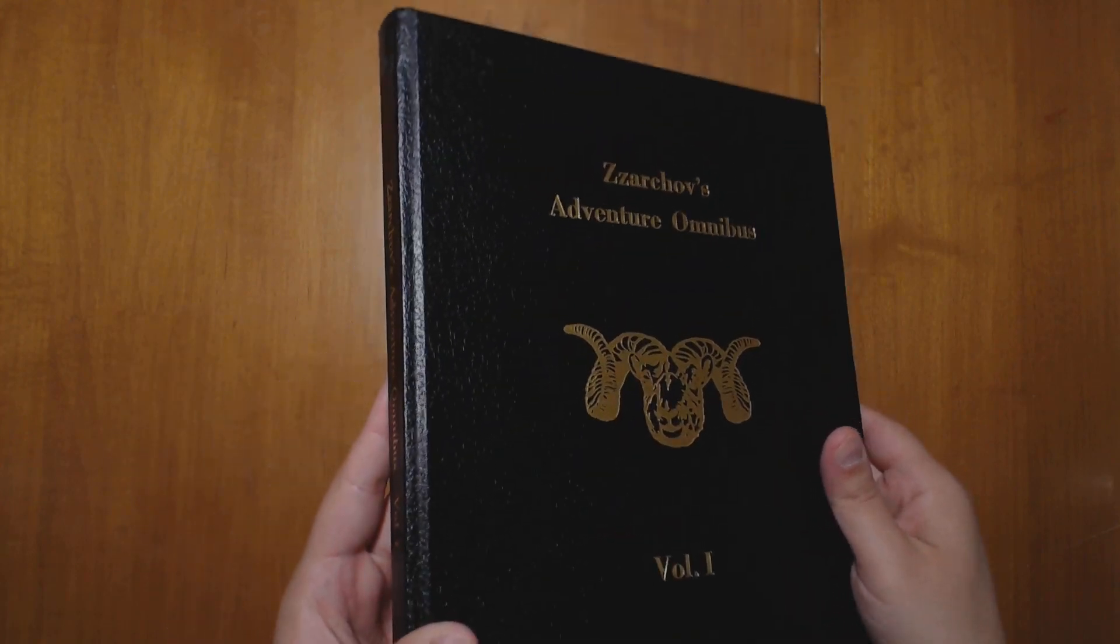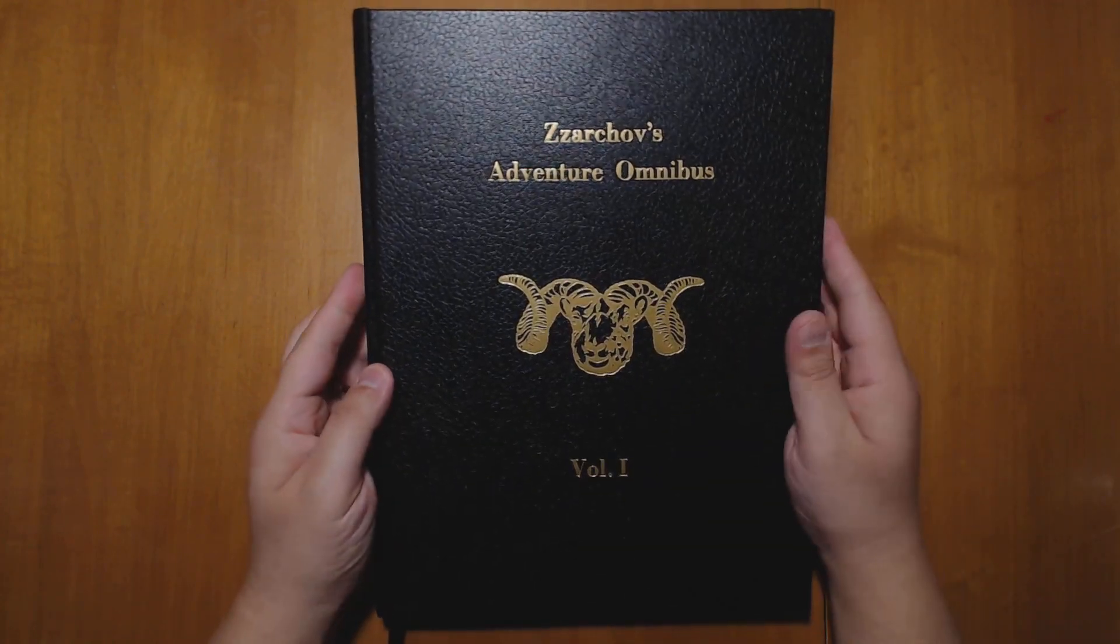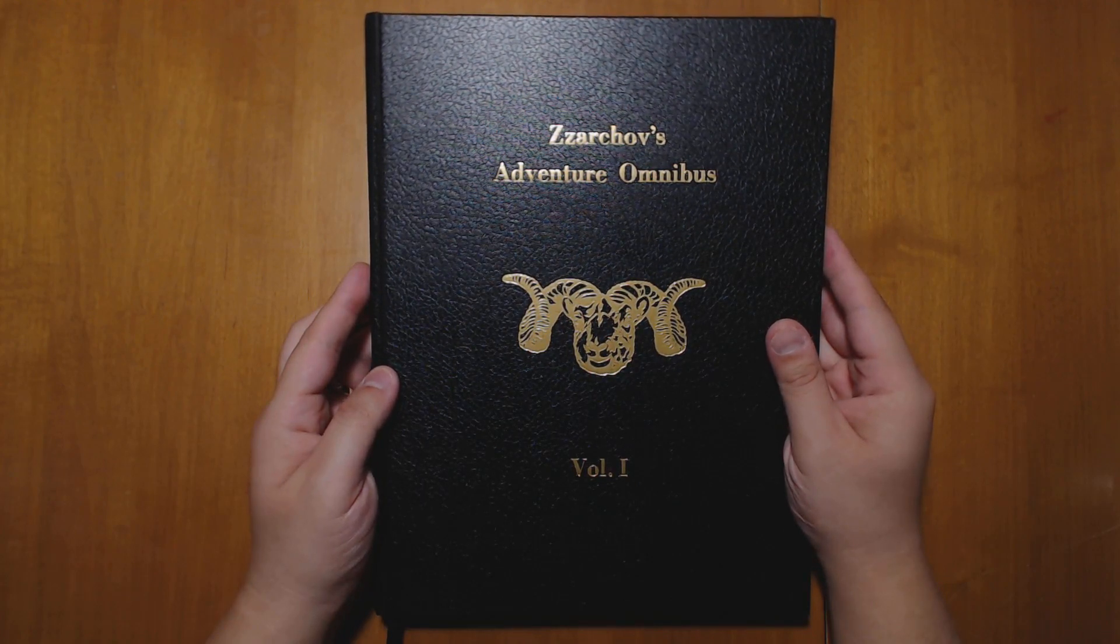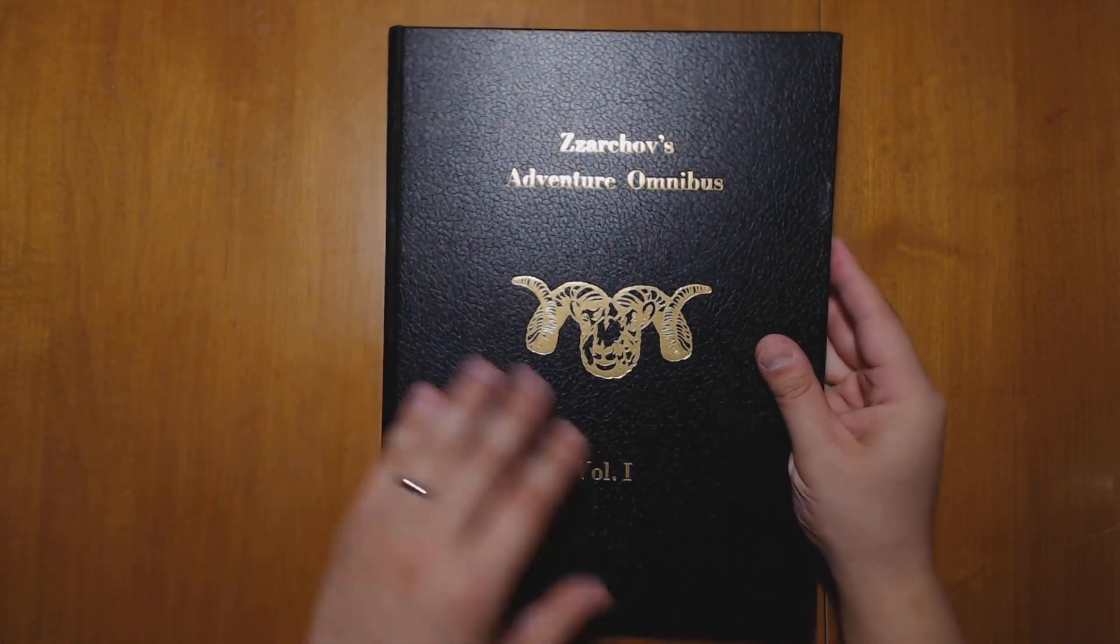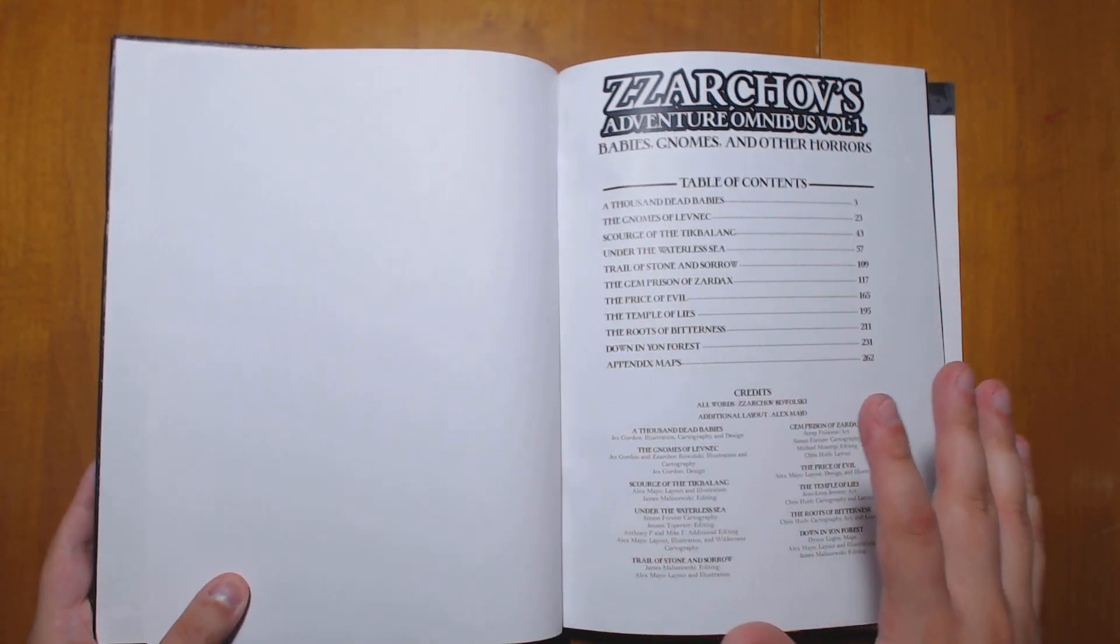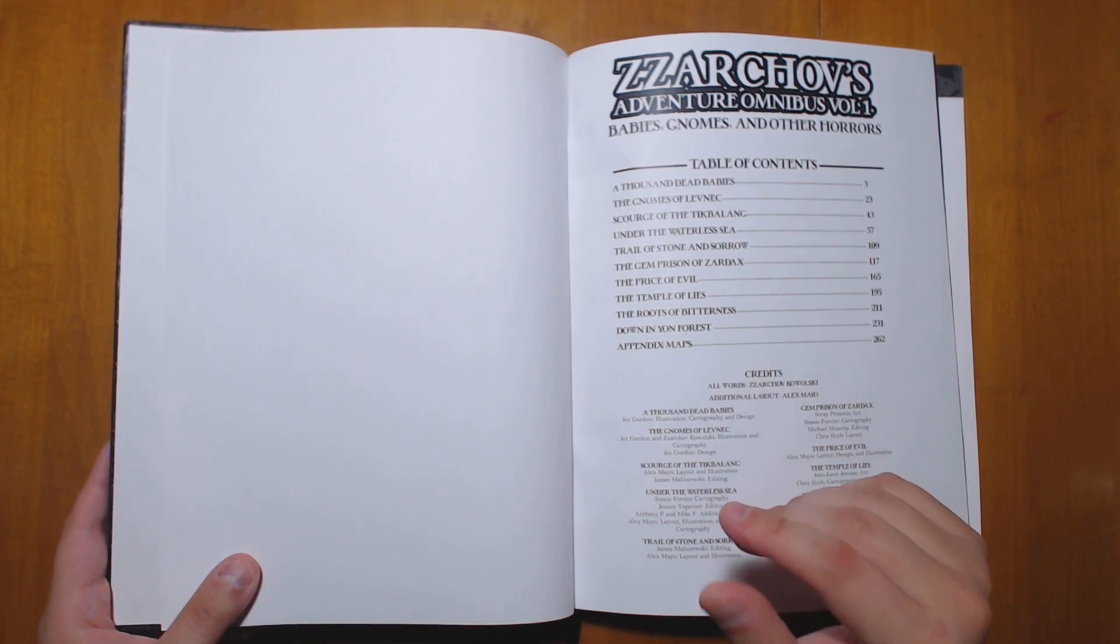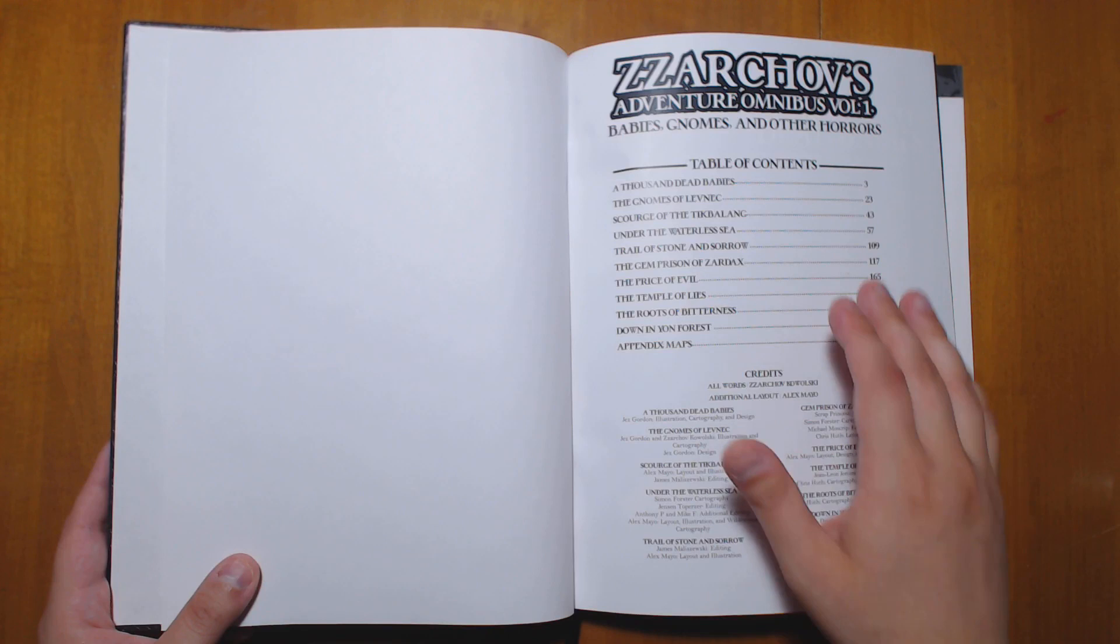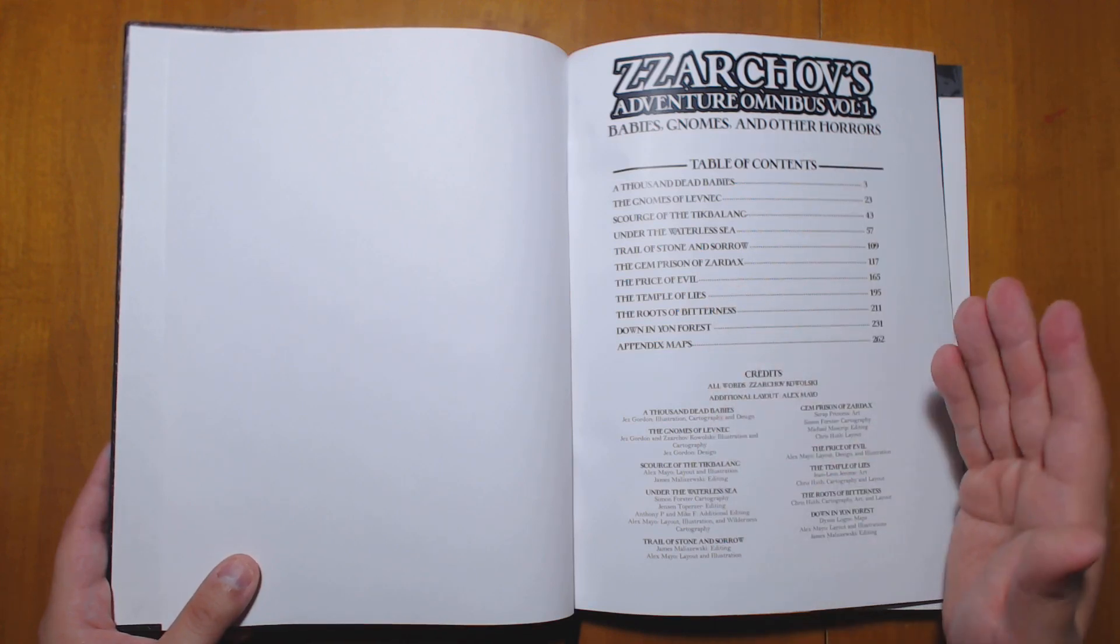Let's dig into what we have here. So this is a limited edition omnibus collecting a bunch of his adventures, most of which are available in PDF from DriveThruRPG for fairly cheap, usually in the three to eight dollar range. This is like a limited edition special thing. He hasn't printed more of these, so at the moment you can't get this particular edition. However, I did talk to him and he said that there are plans in motion to do a volume two Adventure Omnibus, and when that comes out, there might be a second printing of this as well.